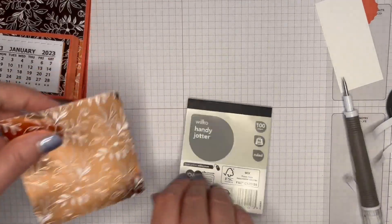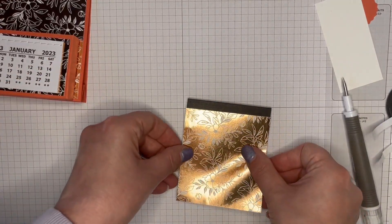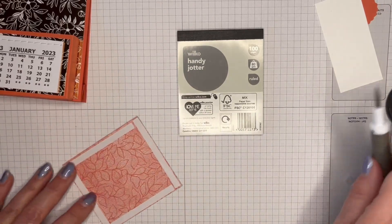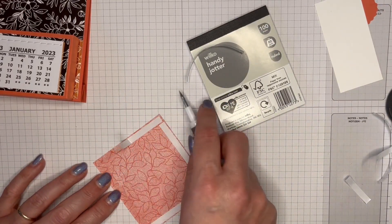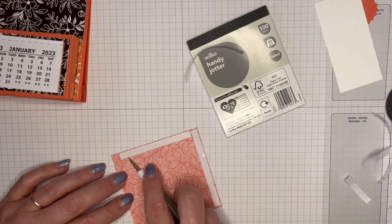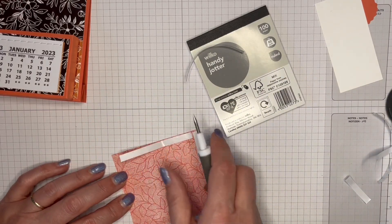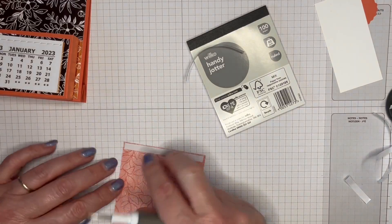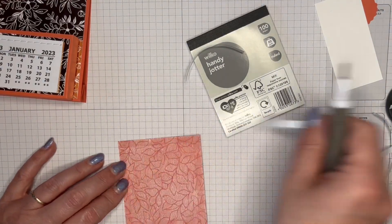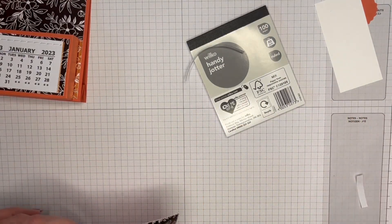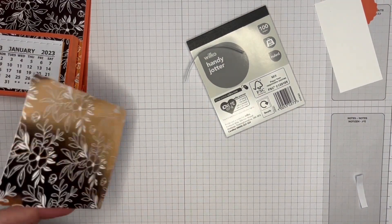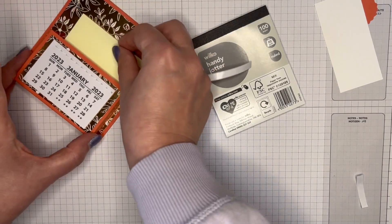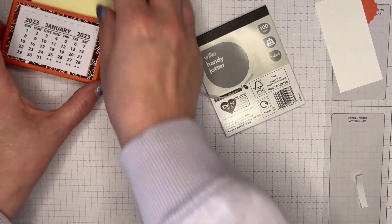Last bit to do is the notepad. And as I say, if you are not in the UK or don't have a Wilco anywhere near you, you could put in a different size of notepad, whatever you can find, or a pack of post-it notes to fit in. I don't have a full pack, but I've got a little bit here. I can show you that. That fits in there nicely as well.